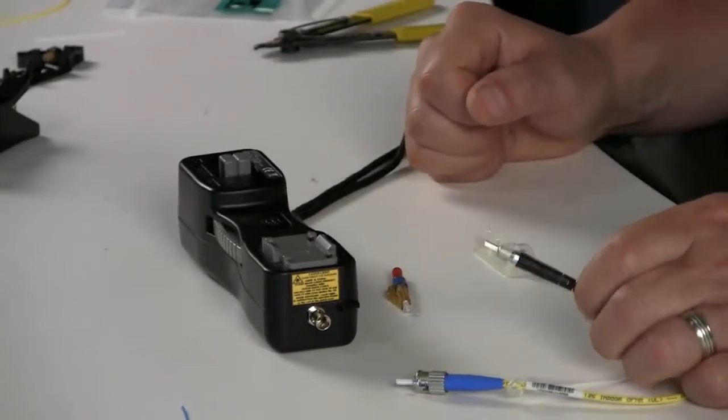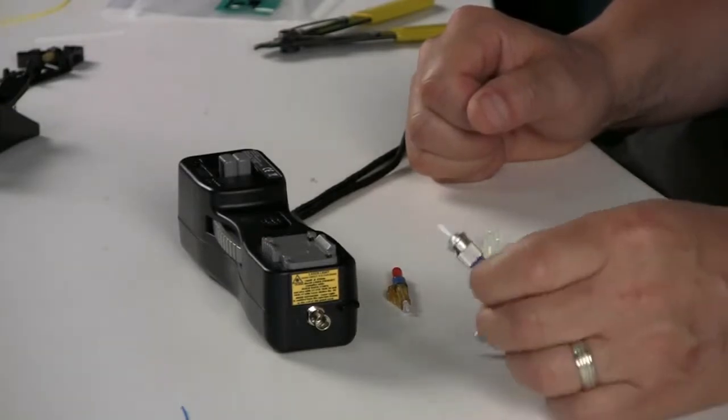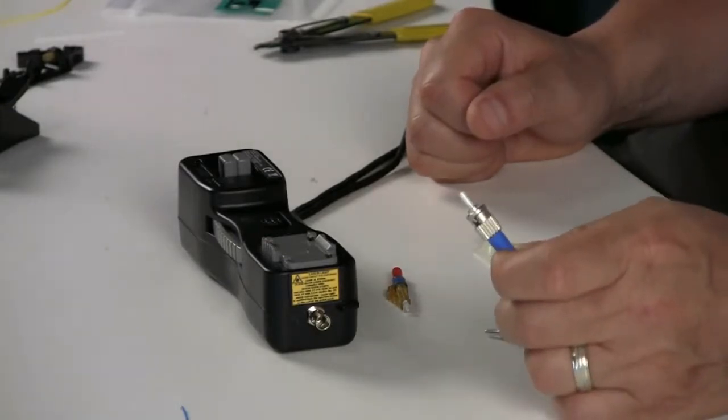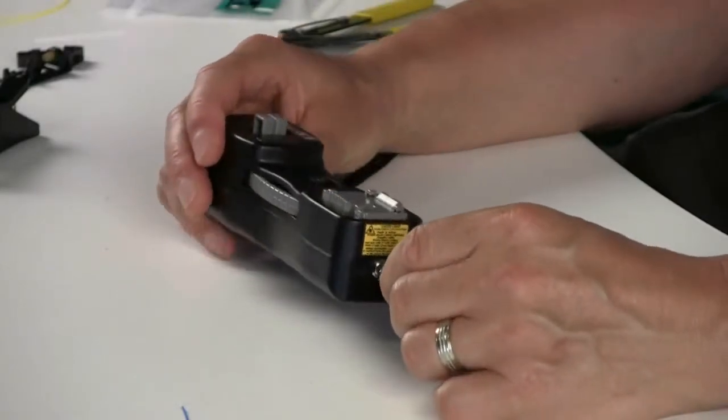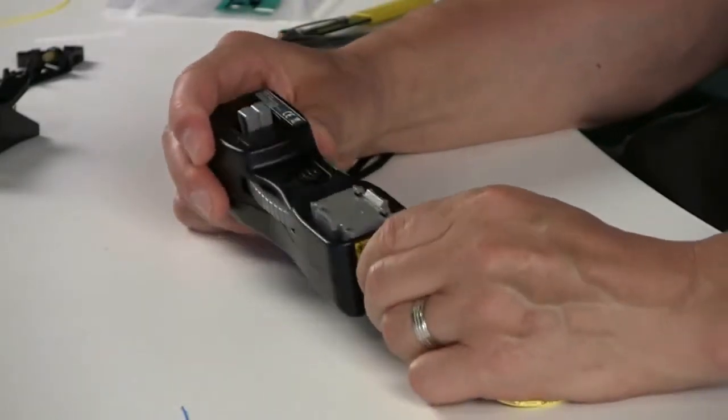Today we're doing LCs so we're going to use the 1.25 mm cord. The ST portion of the patch cord lines up and goes into the LED portion of the OptiCam tool.